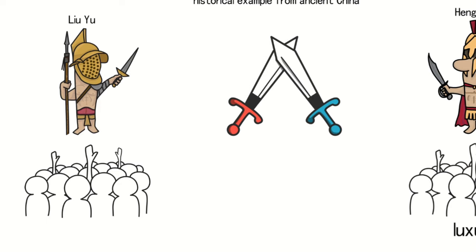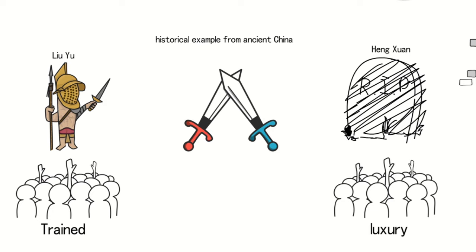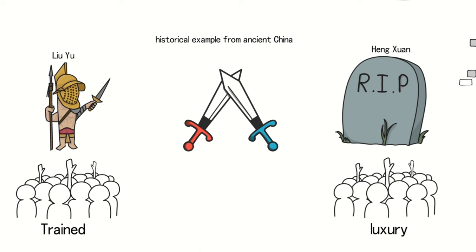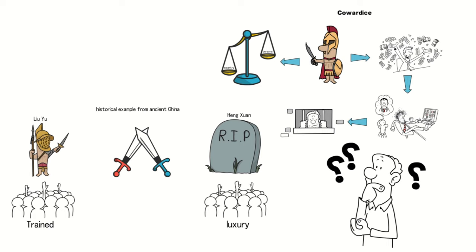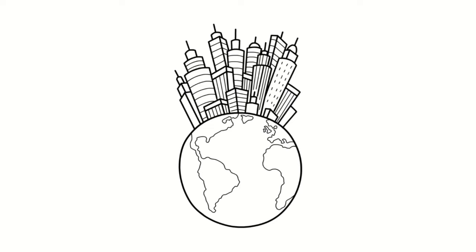As a result, it was evident that Heng Xian's forces were defeated and he died in battle. This exemplifies the truth in Sun Tzu's viewpoint. What insights can we draw from Sun Tzu's viewpoint in our present context? Today, our living standards are considerably high, but we must not let our thoughts become complacent.